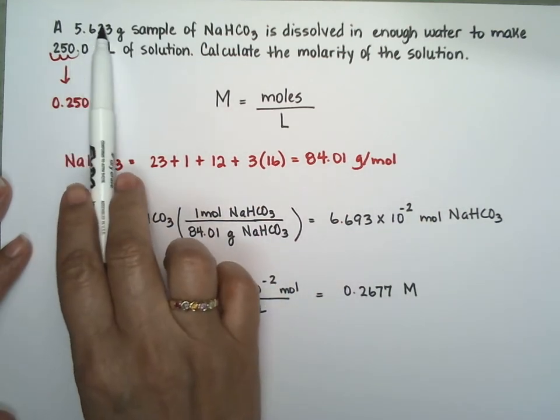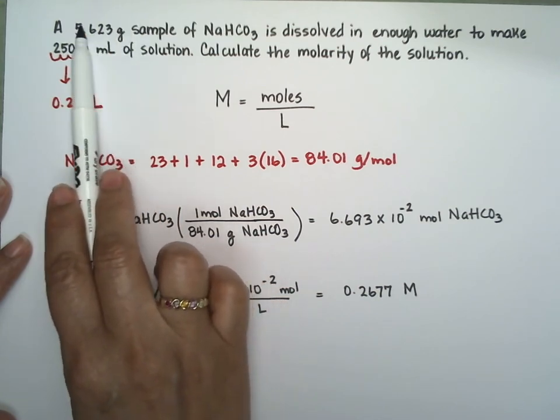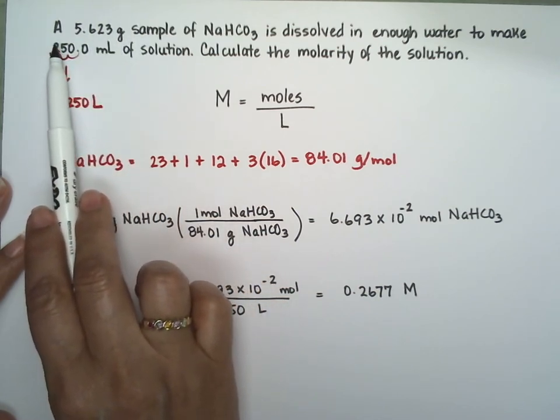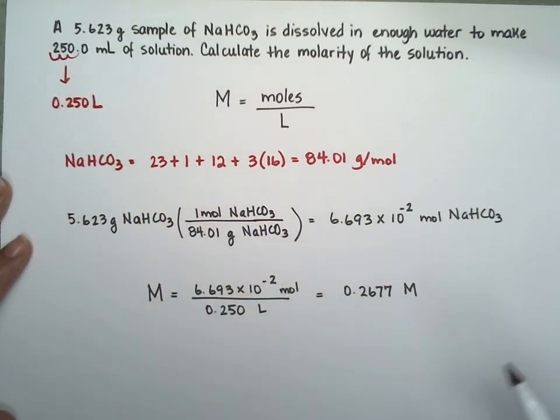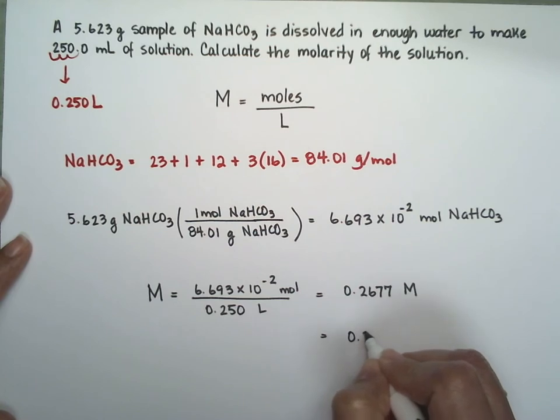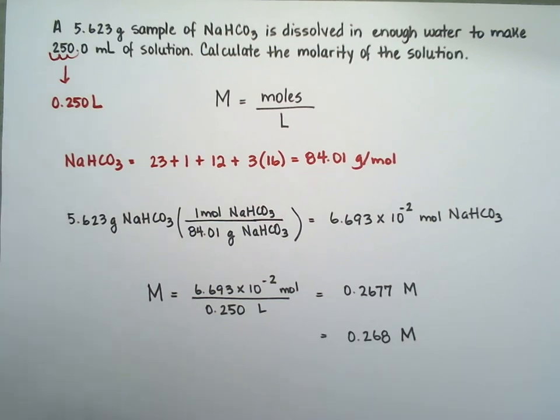So now we're going to look at here, we're going to have 1, 2, 3, 4 significant figures. This one has 1, 2, 3. So we're going to go ahead and cut it to 3, 6, and we're going to round up that one. So we have a solution that's 0.268 molar. That's how you do molarity.